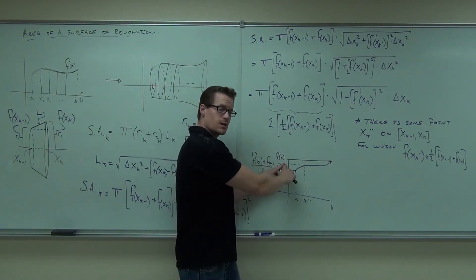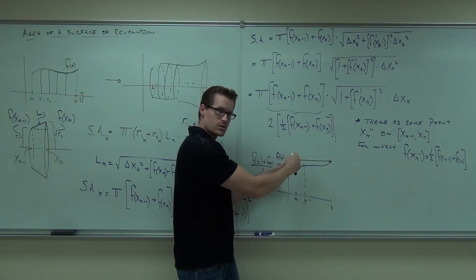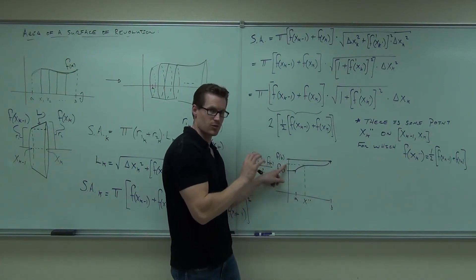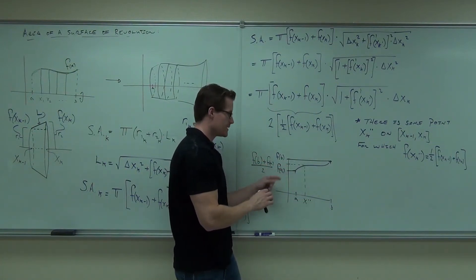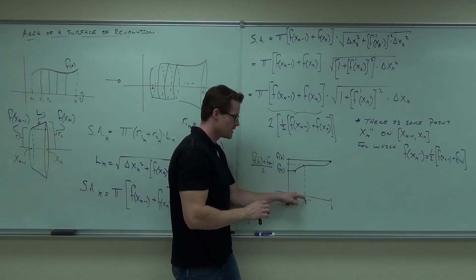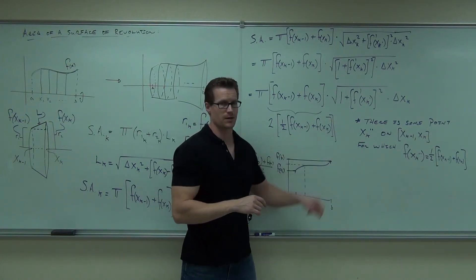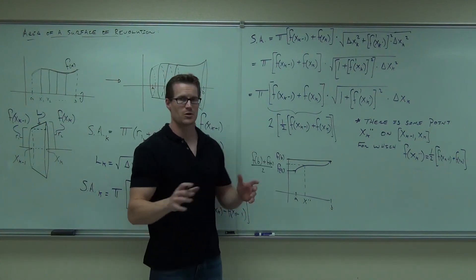There must be some point, since f is continuous, so that I plug in that point between a and b, and it gives me out the average height. It says, this is going to be there. We're calling it x dot dot. Hopefully you understood that.